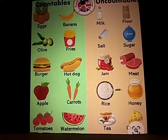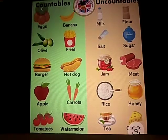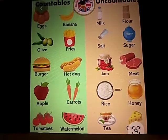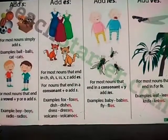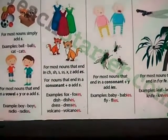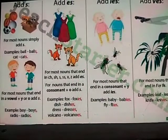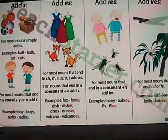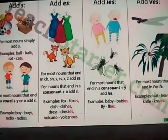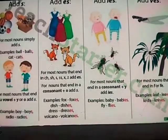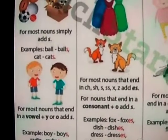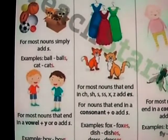A count noun can have a plural form. For example, here on page number 7, the first example is given. Now look at the picture, students. We are going to learn what are the situations when we can add -s to a noun, when we add -es, when we add -ies and -ves. For most nouns, we simply add -s.